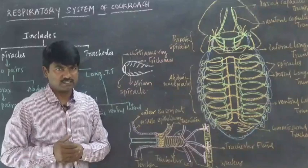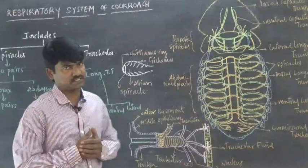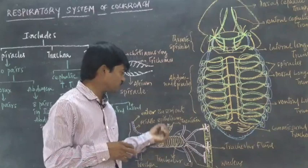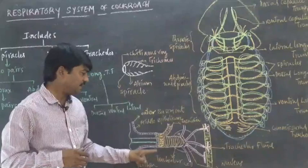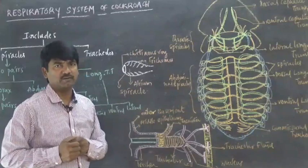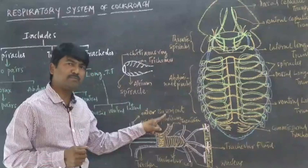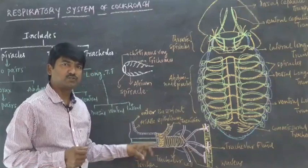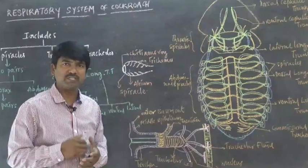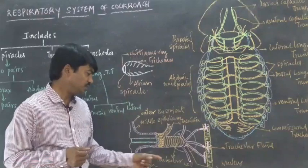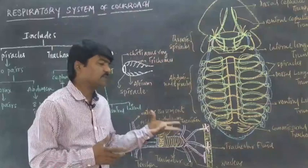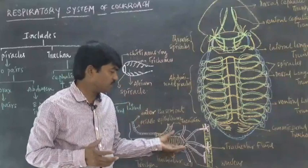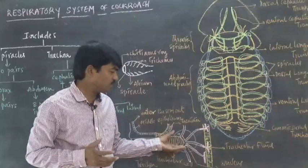Each trachea is composed of three layers: the outermost basement membrane, the middle epithelium layer, and the inner intima layer. Between the two intima layers, spiral thickenings composed of chitin material are present. These structures are known as taenidia. Taenidia prevent the collapsing of the trachea whenever oxygen or carbon dioxide passes through these structures.